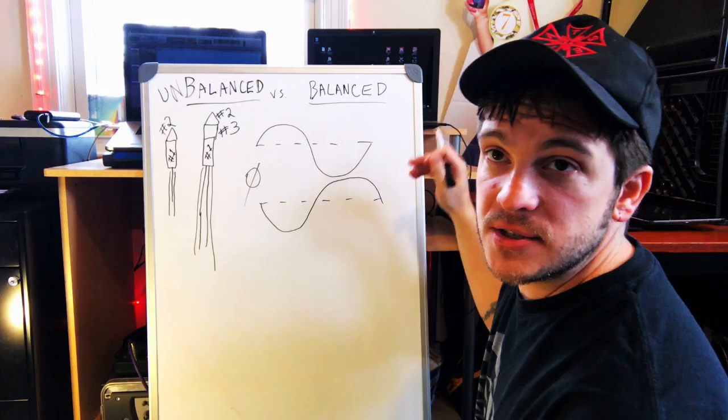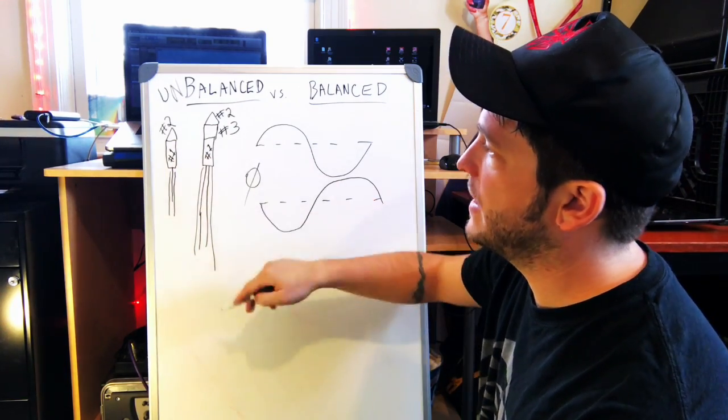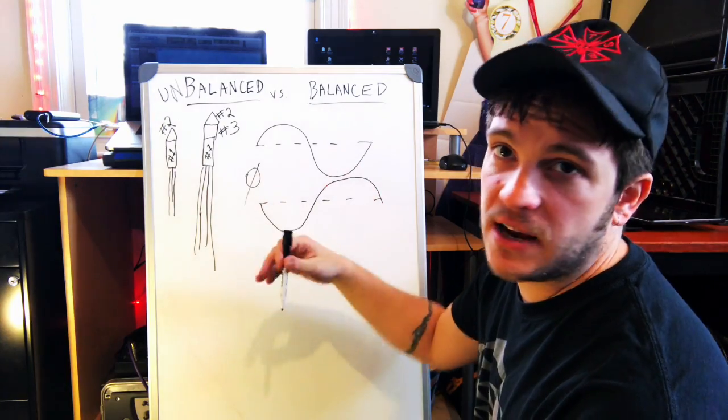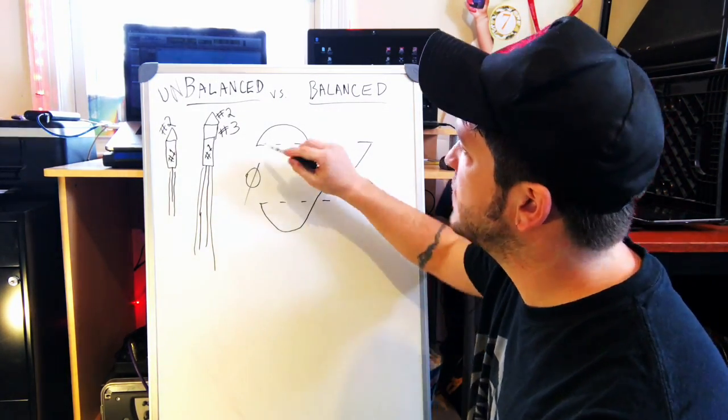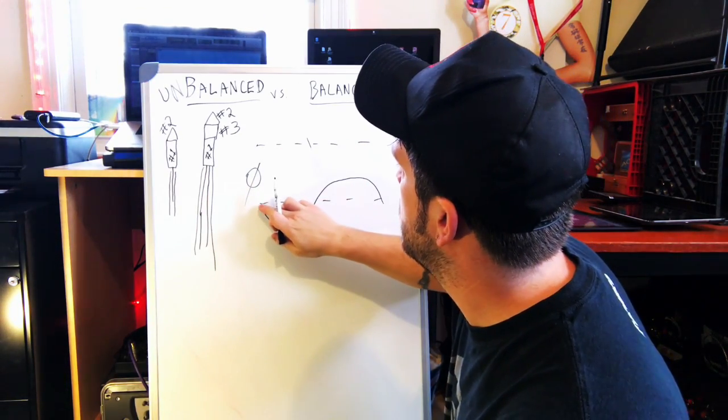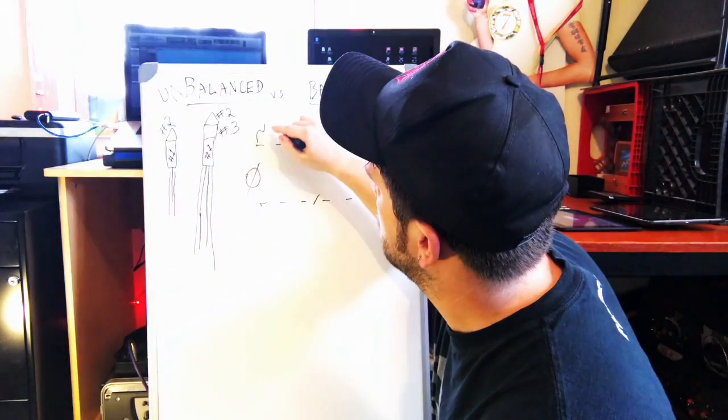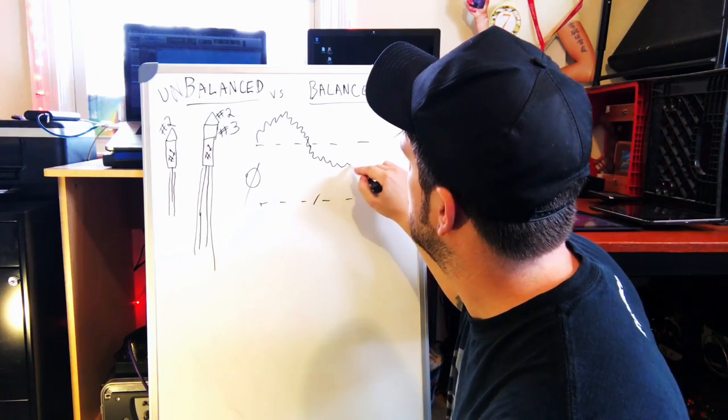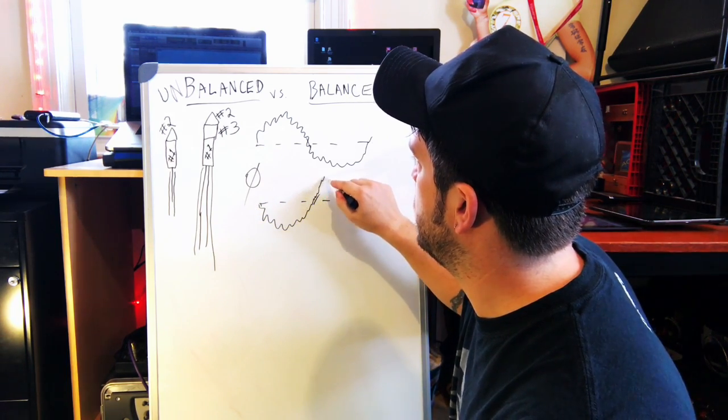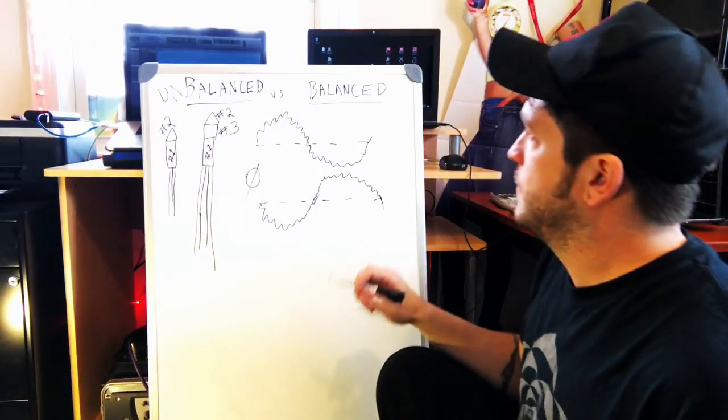Now, what happens is the noise gets inducted on the line the same way it does on the unbalanced line. There's nothing special about this that blocks noise any more than the unbalanced line at this stage. Same shield blocks out and drains to ground as much interference as possible, but the noise still gets inducted onto our signal, onto pins two and three. So, instead of our pure-looking sine wave, we will get the noise plus the signal. Here it is on pin three, 180 degrees out of polarity.